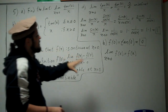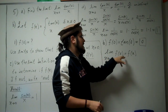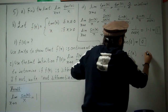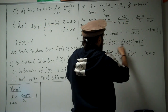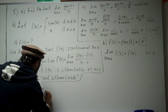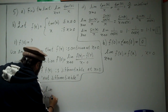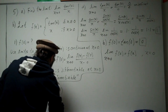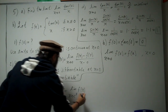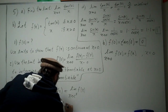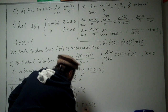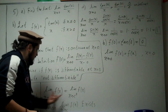Now we need to use limits to show that f(x) is continuous at x = 0. In order to show continuity, the limit as x approaches 0 of f(x) has to equal f(0), which we know is 0. To confirm the limit exists, we recall that if the left-hand limit as x approaches c equals the right-hand limit as x approaches c, then the two-sided limit exists.